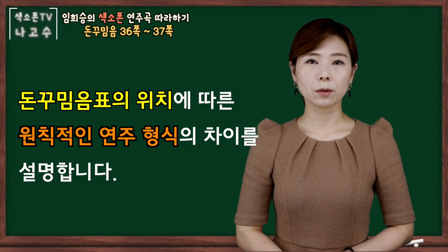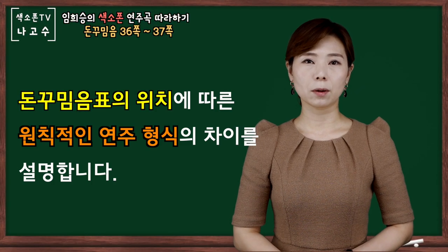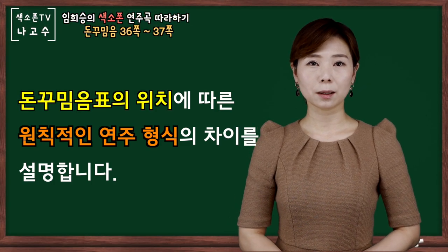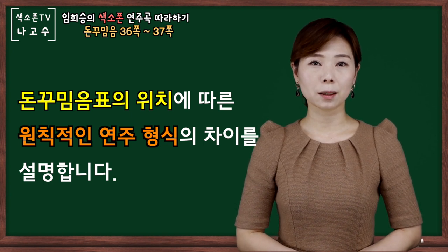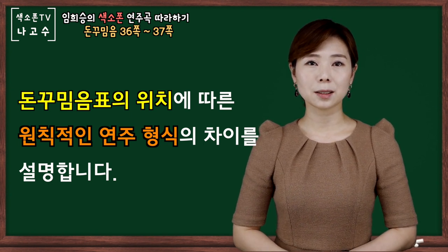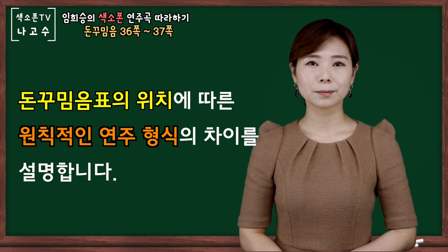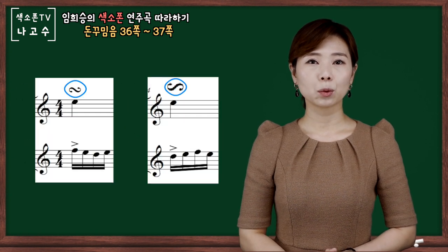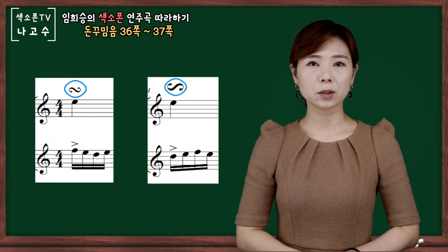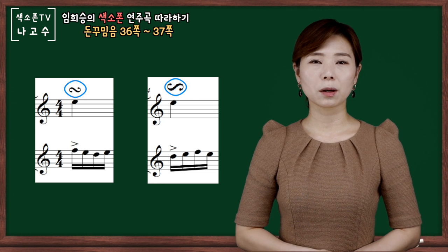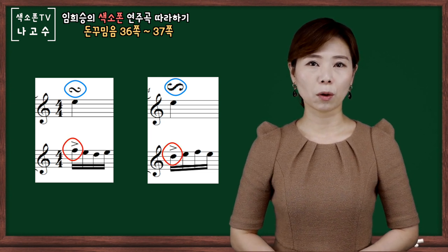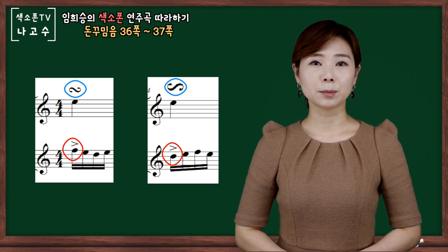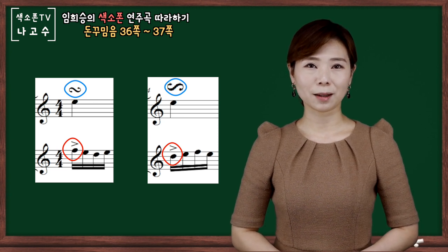돈 꾸밈음의 연주 방법에 대해서 살펴보도록 하겠습니다. 돈 꾸밈음 표가 어디에 있느냐에 따라서 연주 방법이 달라지는데요. 음 바로 위에 돈 꾸밈음이 그려져 있다면 원음부터 연주하는 것이 아니라 원음 위에 아니면 원음 아래음부터 시작하여 4개의 음을 연주하면 되겠습니다.